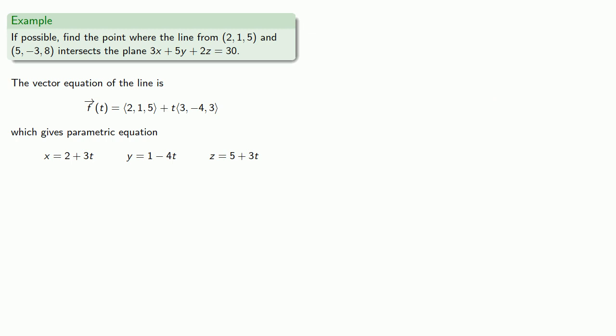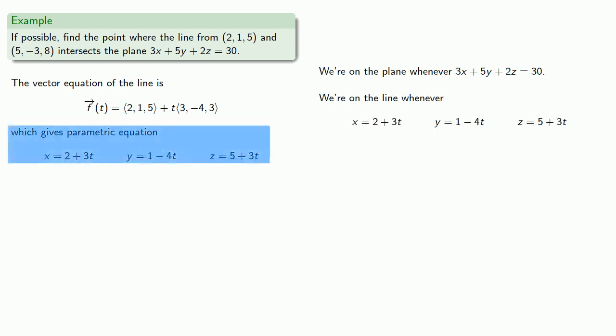Now we want to find the intersection of the line and the plane. So remember, we're on the plane whenever 3x + 5y + 2z = 30. Meanwhile, we're on the line whenever x = 2 + 3t, y = 1 - 4t, and z = 5 + 3t.